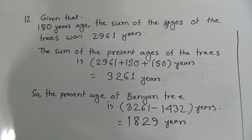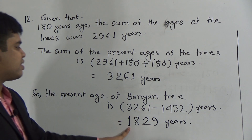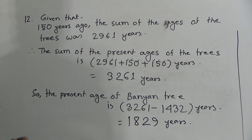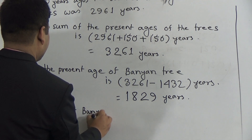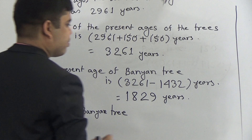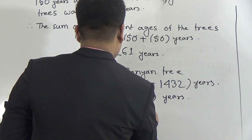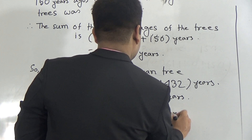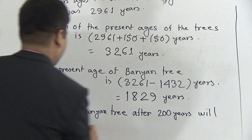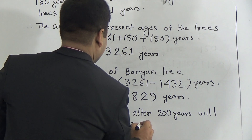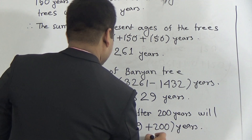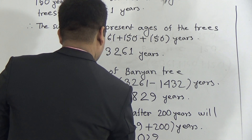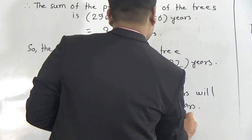Now, my dear student, the question asks you to find out the age of the banyan tree after 200 years. So we add 200 years to the present age of the banyan tree to get the required answer. The age of the banyan tree after 200 years will be 1,829 plus 200 years. We do the addition and get 2,029 years. That is the answer.